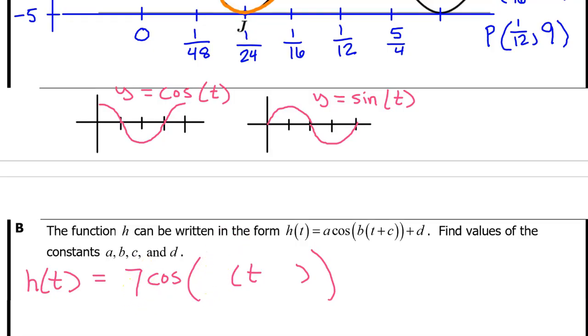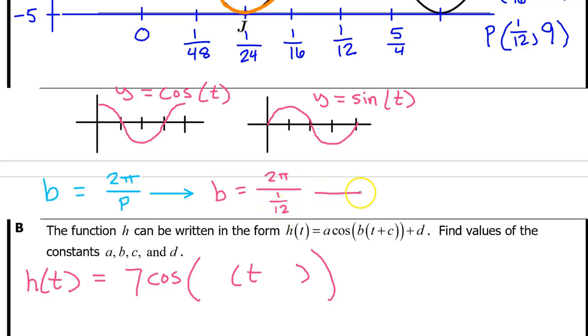Let's move on to the b value. We have memorized that the b value is 2π divided by the period for sine and cosine. So in this case, we found that the period is 1 over 12, so the b value is going to equal 2π divided by 1 over 12. When you divide by a fraction, you multiply by the reciprocal. So the b value will equal 2π times 12 over 1. So that means the b value is 24π. And that can just go right here.